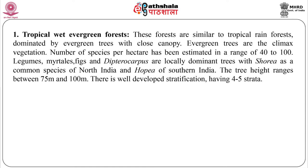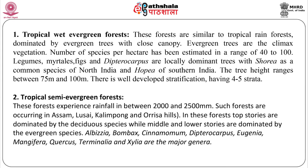The first one is the tropical wet evergreen forest. These forests are similar to tropical rainforest, dominated by evergreen trees with closed canopy. Evergreen trees are the climax vegetation. Number of species per hectare has been estimated in a range of 40 to 100. The next is the tropical semi-evergreen forest. These forests experience rainfall between 2000 to 2500 millimeters. Such forests occur in Assam, Lusai, Kalimpong and Orissa hills. In these forests, top stories are dominated by the deciduous species, while middle and lower stories are dominated by the evergreen species.